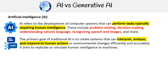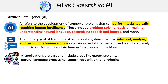The primary goal of traditional AI is to create systems that can interpret, analyze, and respond to human actions or environmental changes efficiently and accurately. It aims to replicate or simulate human intelligence in machines. AI applications are vast and include areas like expert systems, natural language processing, speech recognition, and robotics.